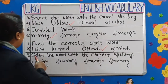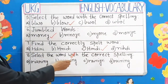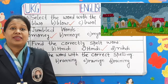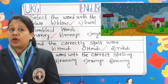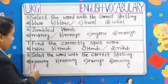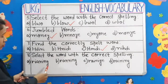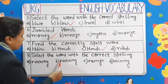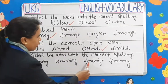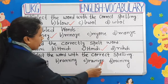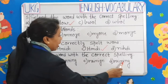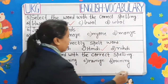Question number 8: Select the word with the correct spelling. Can you tell me what is happening in the picture? Yes, it is raining. Let's choose the correct spelling of raining. Should it be R-I-A-N-I-N-G? No. Should it be R-A-N-N-I-N-G? No. Should it be R-A-I-N-I-N-I-N-G? No. Should it be R-A-I-N-I-N-G? Yes. Raining.